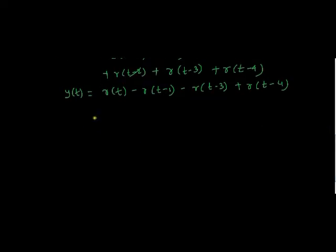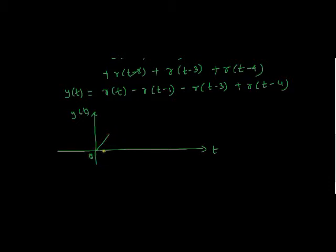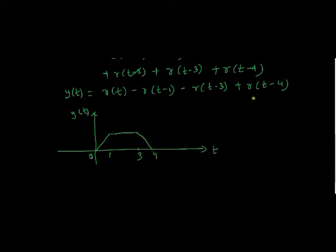Let's see how y of t looks graphically. On the x-axis, we have t and on the y-axis, y of t. We have r of t starting at t equal to 0. At t equal to 1 we subtract r of t minus 1, so the ramp gets cancelled and the signal becomes flat. This flat response continues until t equal to 3, where another ramp adds a downward slope. At t equal to 4 we add r of t minus 4, which cancels the downward slope.